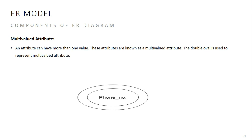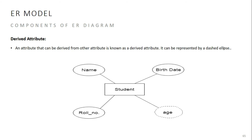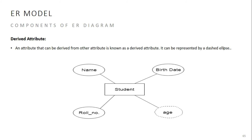Derived attributes are attributes that can be derived from other stored attributes. For example, age can be derived from the date of birth. We represent derived attributes using a dashed ellipse. We already have the date of birth stored, and from that we can derive the current age using: age = present date minus date of birth.